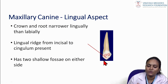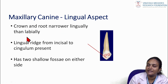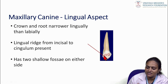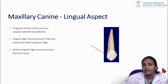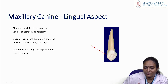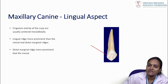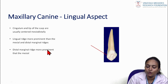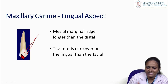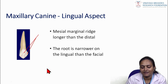From the lingual aspect of the maxillary canine, the crown and root are narrower lingually than labially. The lingual ridge runs from the incisor tip to the cingulum, with shallow fossae on either side. The cingulum and the tip of the cusp are usually centered mesiodistally. The lingual ridge is more prominent than the mesial and distal marginal ridges. The distal marginal ridge is more prominent than the mesial ridge. The root is narrower on the lingual side than the facial side.